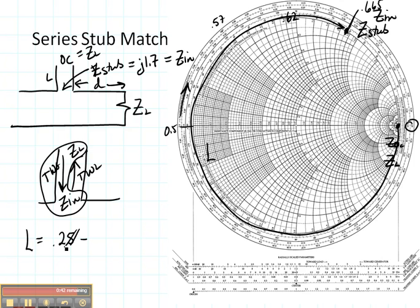So, oops, I'm doing this backwards. It should be 0.665 minus 0.25 wavelengths. And that's the length.